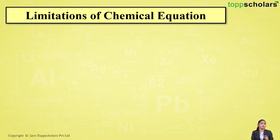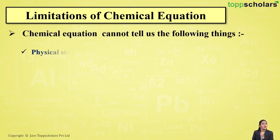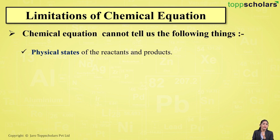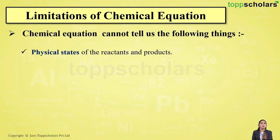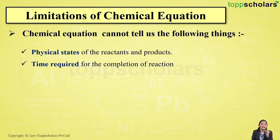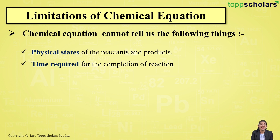Now there are some limitations of a chemical equation. A chemical equation does not represent the physical states of the reactants and products — from the equation, you cannot identify whether a reactant is in the solid, liquid, or gaseous state. Similarly, the chemical equation does not indicate the time required for the completion of the reaction; by looking at it, you cannot determine how long the reaction takes.